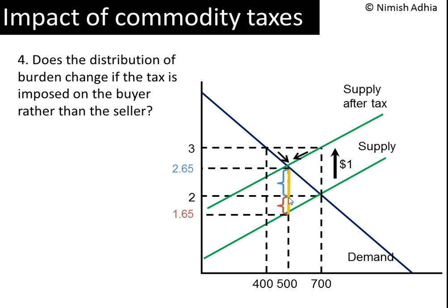That is, the government had collected the $1 tax from the consumers rather than the producers. The answer is that there would be no difference. It is an important and startling conclusion of economic theory that legal incidence of a tax does not determine the actual incidence of that tax. In other words, the distribution of burden of tax between consumers and producers is not determined by who the tax is collected from.